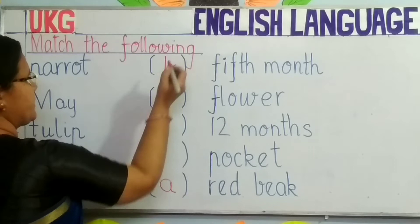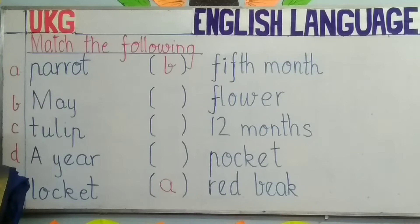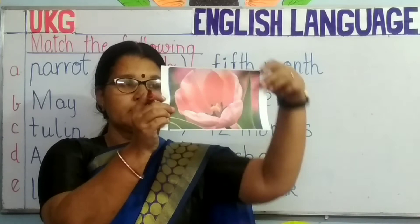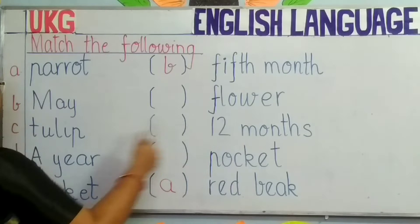Next line, C: tulip. What is tulip, children? Tulip is a flower. Look, a tulip is a beautiful flower. So you need to look out for flower and match tulip. This is flower. You will write C.